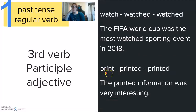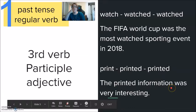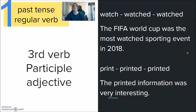Another example with print. Printed, printed. The printed information was very interesting. Which information? The printed information. Adjective to describe the information. As opposed to the spoken information, the online information, the false information, the true information, the printed information.